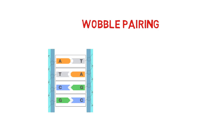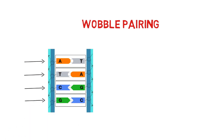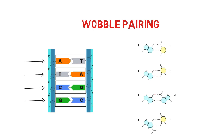Normally, A pairs with T and T pairs with A, C pairs with G and G pairs with C — but in RNA, four base pairs are different.